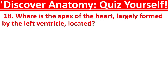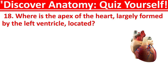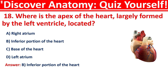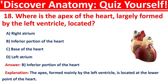Question 18: Where is the apex of the heart, largely formed by the left ventricle, located? Options are: in the right atrium, in the inferior portion of the heart, in the base of the heart, or in the left atrium. The correct answer is B, that is the inferior portion of the heart. The apex, formed mainly by the left ventricle, is located at the lower point of the heart.